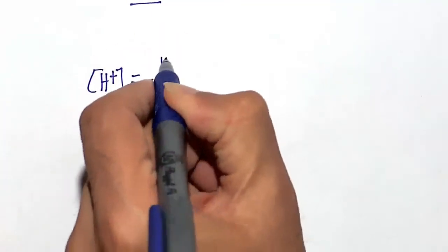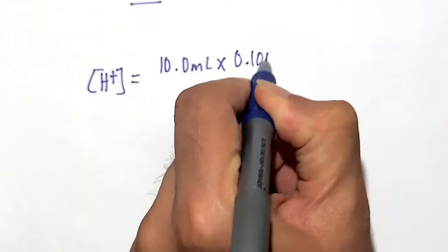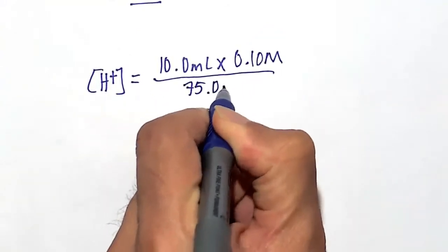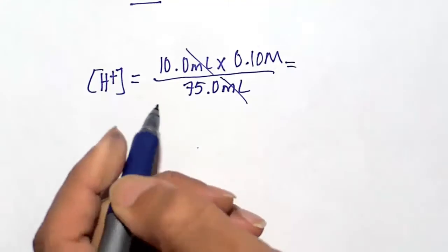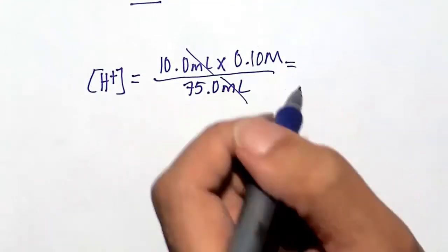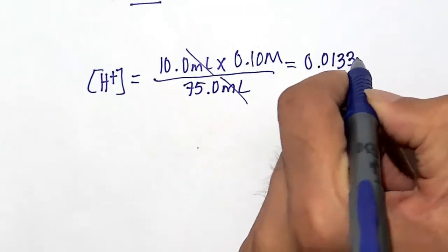The first thing we want to do is figure out after we mix these two species together, the strong acid with the buffer, what's the final concentration after mixing. 10 milliliters of a 0.10 molar HCl, total volume 75 milliliters. Mills cancel. So 10 times 0.1 divided by 75 gives us a final concentration of 0.0133 molar.